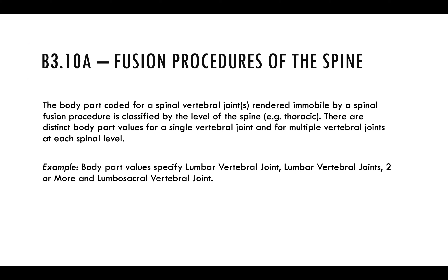Fusion procedures are done specifically in the upper and lower joints. The body part coded for a spinal vertebral joint rendered immobile by a spinal fusion procedure is classified by the level of the spine. There are distinct body part values for a single vertebral joint and for multiple vertebral joints at each spinal level. If you open your coding manuals to the lower or upper joints, you'll see the fusion tables showing the range of all the different vertebrae that could be fused.